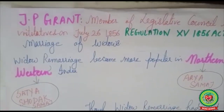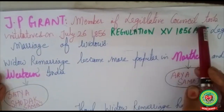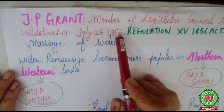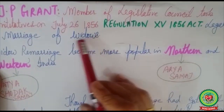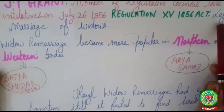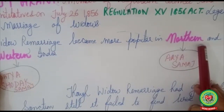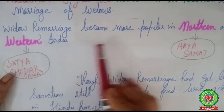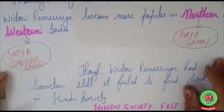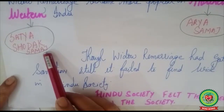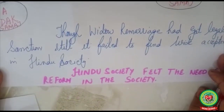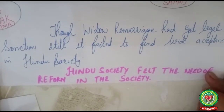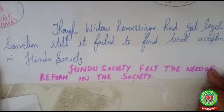With the initiative of J.P. Grant, who was a member of the Legislative Council, on July 26, 1856, under Regulation 15 of the 1856 Act, widow remarriage was legalized in India. Widow remarriage became more popular especially in northern and western India — in northern India it was popularized by the Arya Samaj, and in western India by the Satyashodhak Samaj. Though it had got legal sanction, it still failed to find wide acceptance in Hindu society due to orthodoxy.